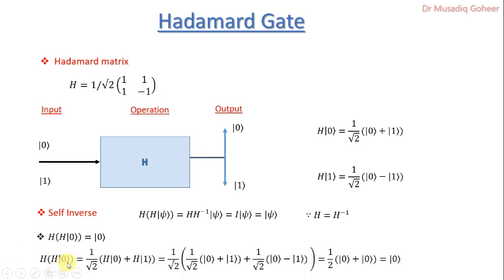When first you apply Hadamard gate on 0 you will get superposition state of 0 and 1 then you apply Hadamard on 0 and 1 again. Then you will get again superposition. If you apply on 0 then you will get the superposition of 0 and 1. When you apply Hadamard on 1 you will get minus sign.